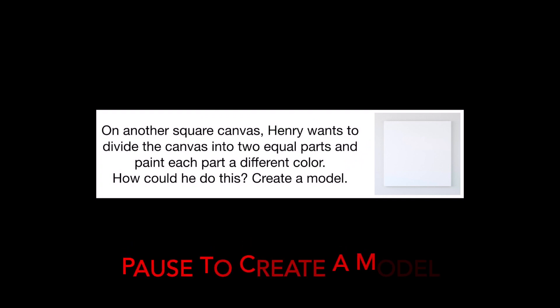On another square canvas, Henry wants to divide the canvas into two equal parts and paint each part a different color. How could he do this? You can pause to create a model.